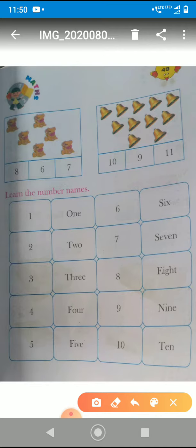So the first one is count and ring the correct number. Okay, so here, how many toys are here? Shall we count? One, two, three, four, five, six. So, six toys are here. Okay, we will circle six.